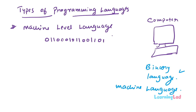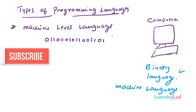The problem with machine level language is that in order to program in it, the programmer is directly dealing with the hardware level — working directly on memory and data. The programmer needs to know everything about the computer: the processor, the computer architecture, everything. That's why machine level language is quite difficult to learn.